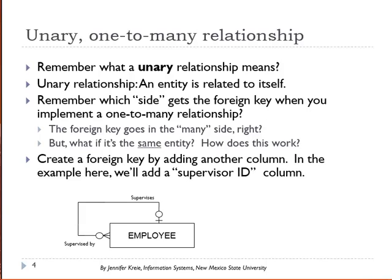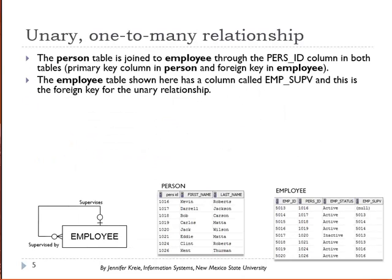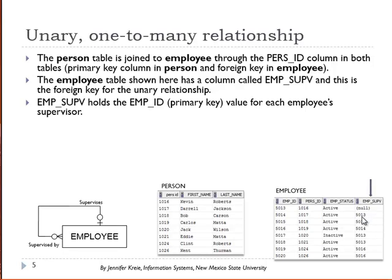We're going to create a column in the employee table that will serve as the foreign key column — in this case, something like Supervisor ID. The person table is joined to employee through the person ID column. The employee table has the unary relationship and includes a column called Emp Supervisor ID that serves as the foreign key field, holding the primary key value of the supervisor for that particular employee.